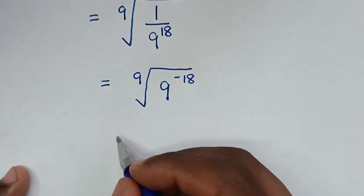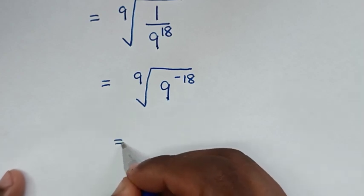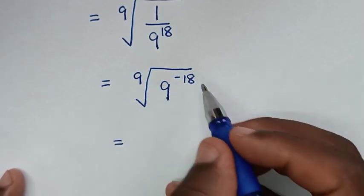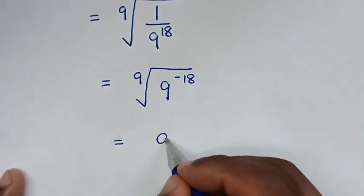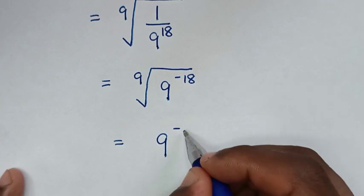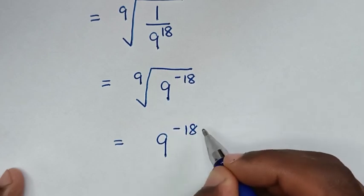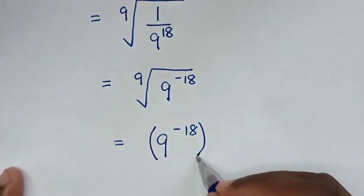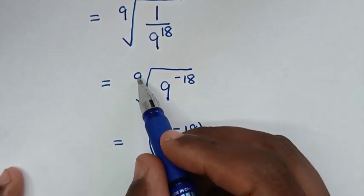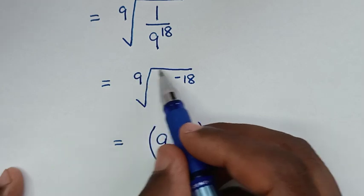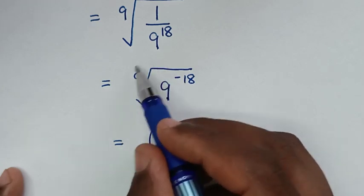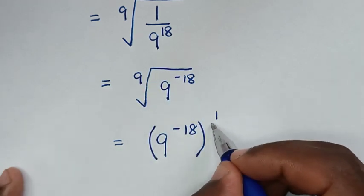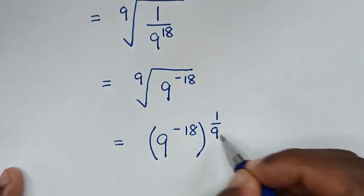Then it will be equal to: we take this under the 9th root, which is 9 power of negative 18, then bracket with the 9th root. The 9th root is the same as raising to the power of 1 over 9.